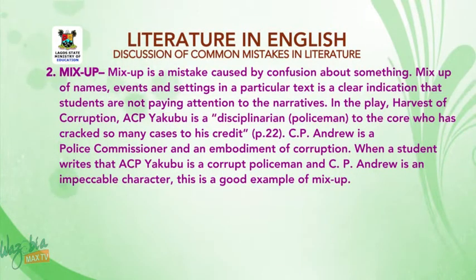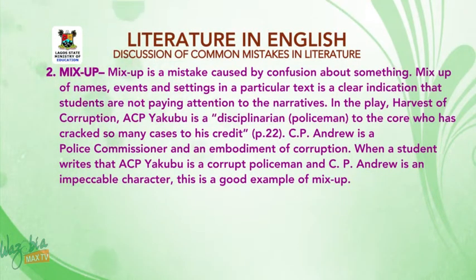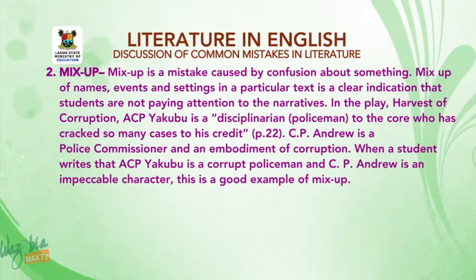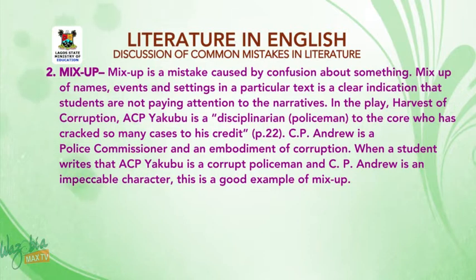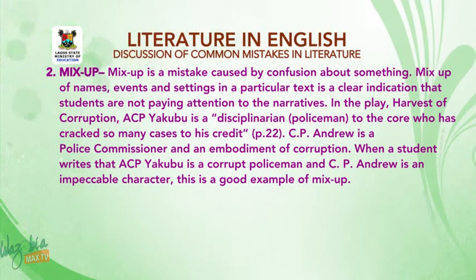In the play Harvest of Corruption, C.P. Yacobu is described as 'a disciplinary policeman to the core who has cracked so many cases to his credit' (page 22), while C.P. Andrew is a police commissioner and an embodiment of corruption. When a student writes that C.P. Yacobu is a corrupt policeman and C.P. Andrew is an impeccable character, this is a good example of misspelling of names and events.